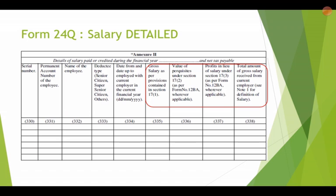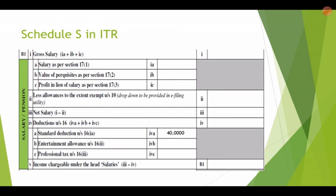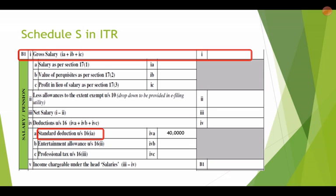Form 24Q, the salary TDS return, has also been made very detailed — gross salary, value of perquisites, profit in lieu of salary, total amount of salary from the current employer and from the previous employer, and all deductions are very detailed in the revised Form 24Q. Similarly, Schedule S in the ITR, which has already been notified, also has very detailed salary information — with various drop-downs for allowances exempt under Section 10 and for deductions — and the gross salary here should be greater than or equal to the salary appearing in 26AS.